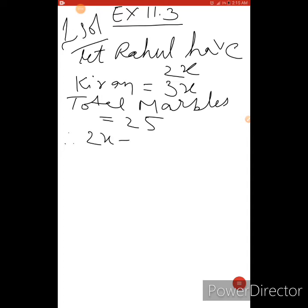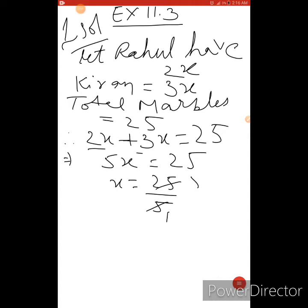2X plus 3X equals to 25. If you add this, how much you will get? 5X equals to 25. X equals to 25 by 5. 5 and the 5. X equals to 5.